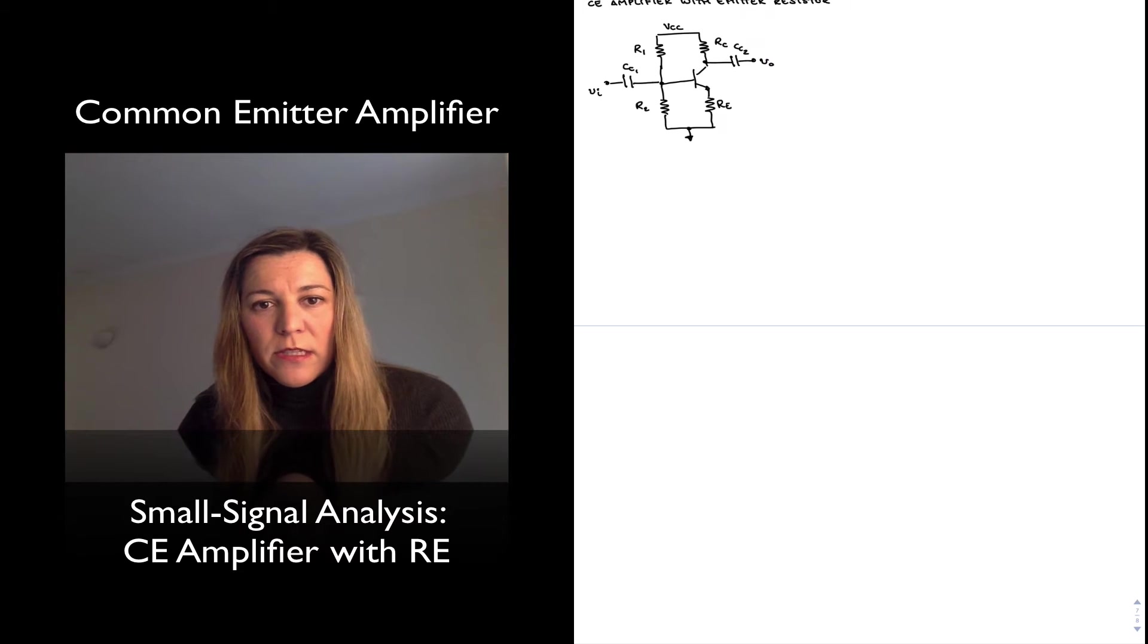Let's look now at the derivation for small signal gain, input and output resistance for a common emitter amplifier with an emitter resistor.